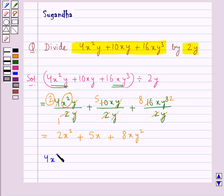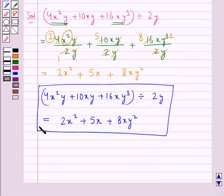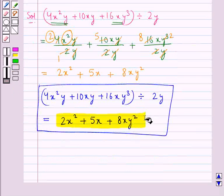Thus, 4x square y plus 10xy plus 16xy cube that is the given polynomial is divided by the monomial 2y and the result obtained is equal to 2x square plus 5x plus 8xy square. So this is our final answer.